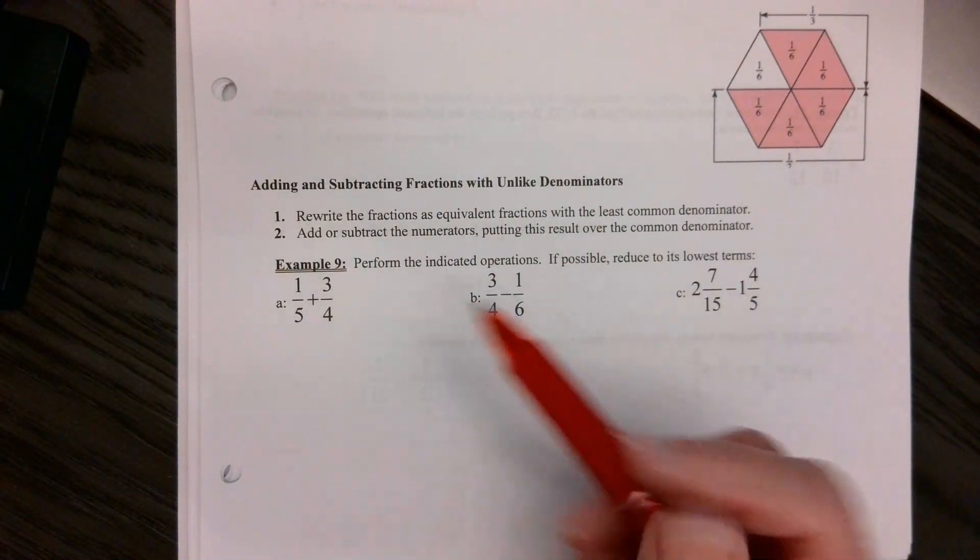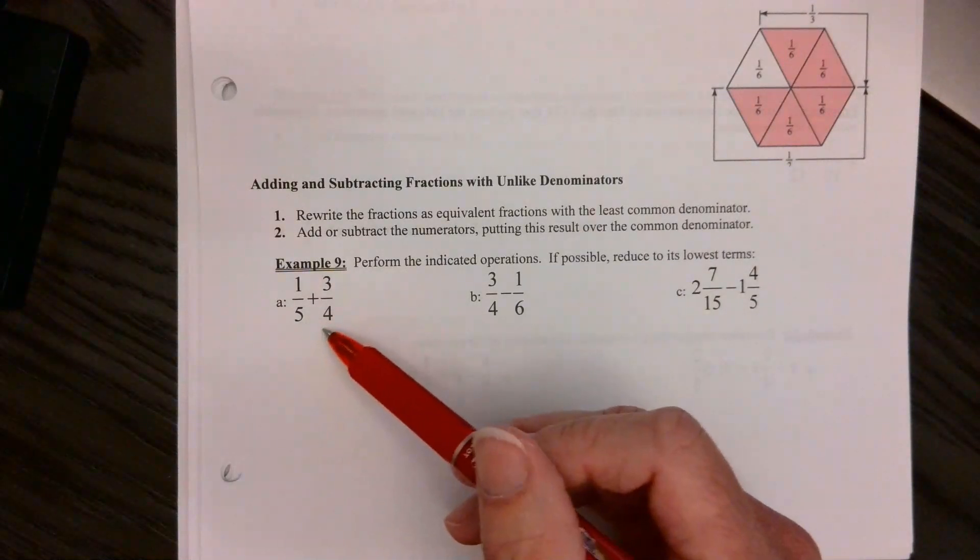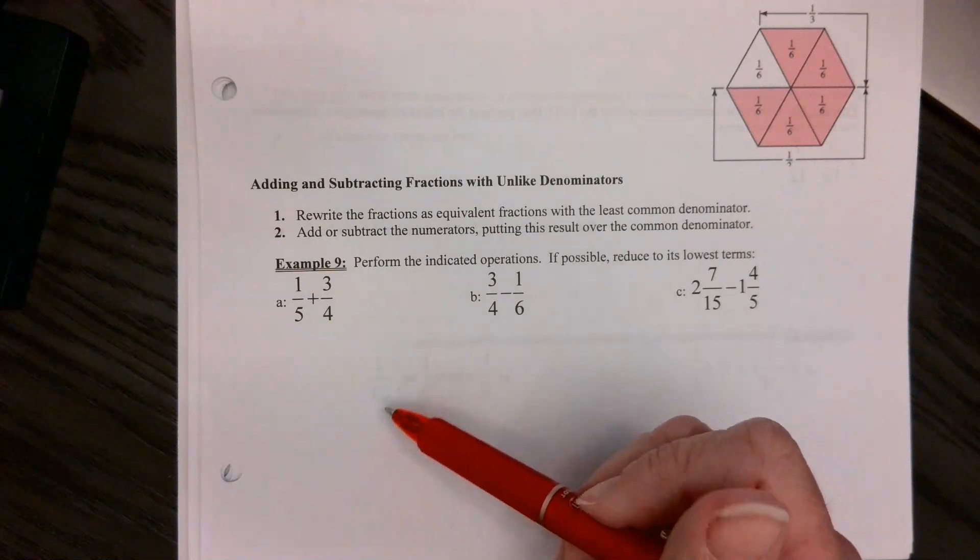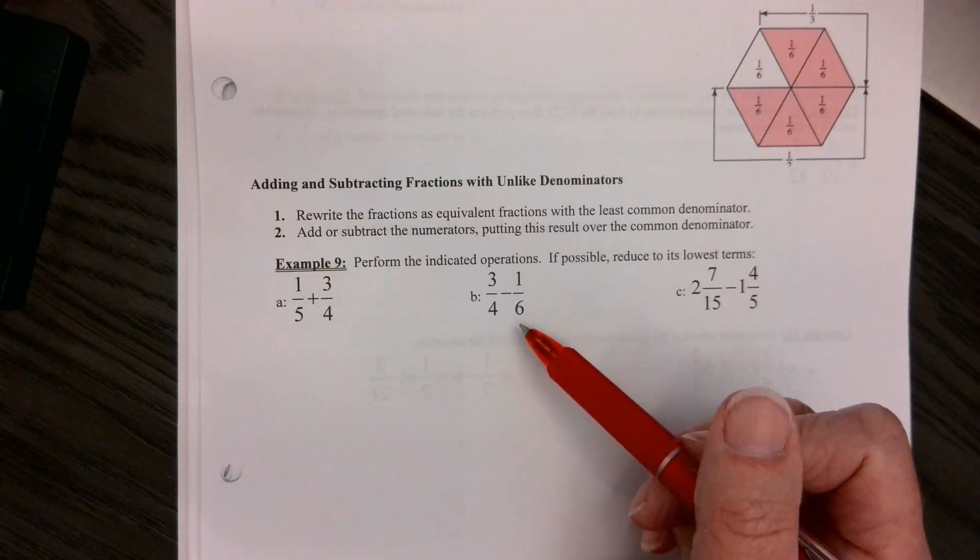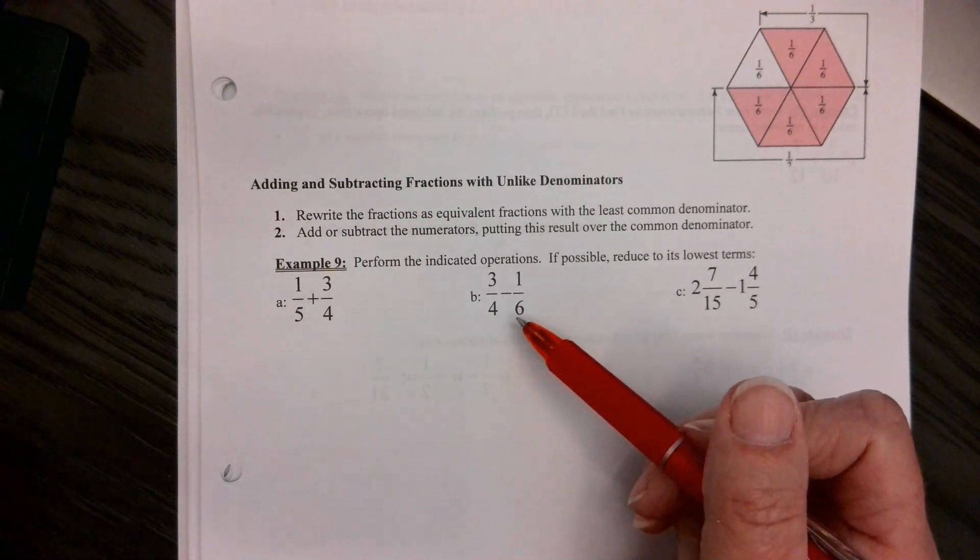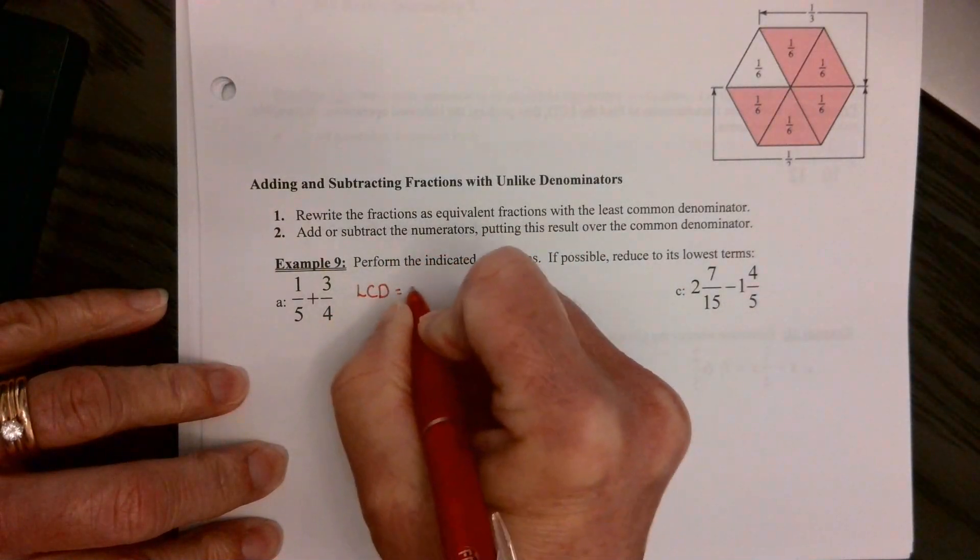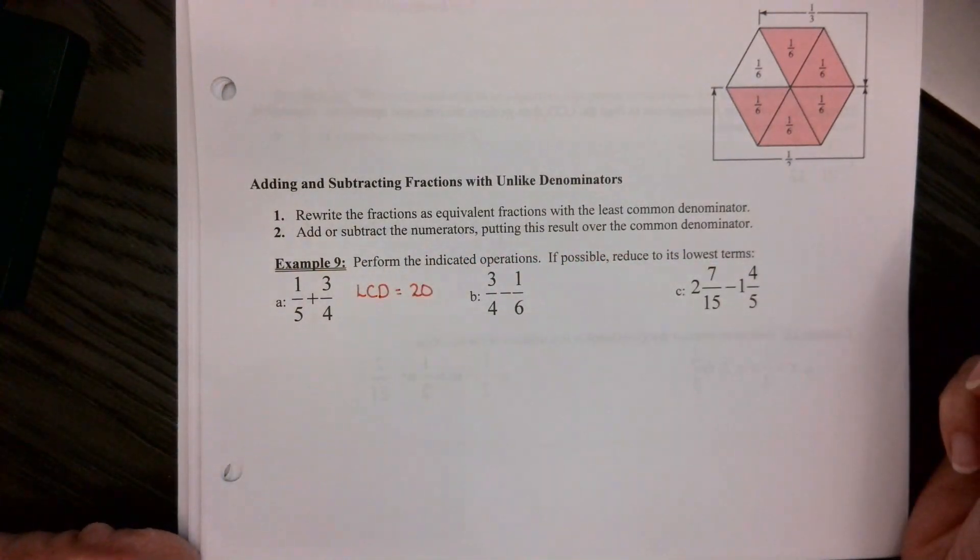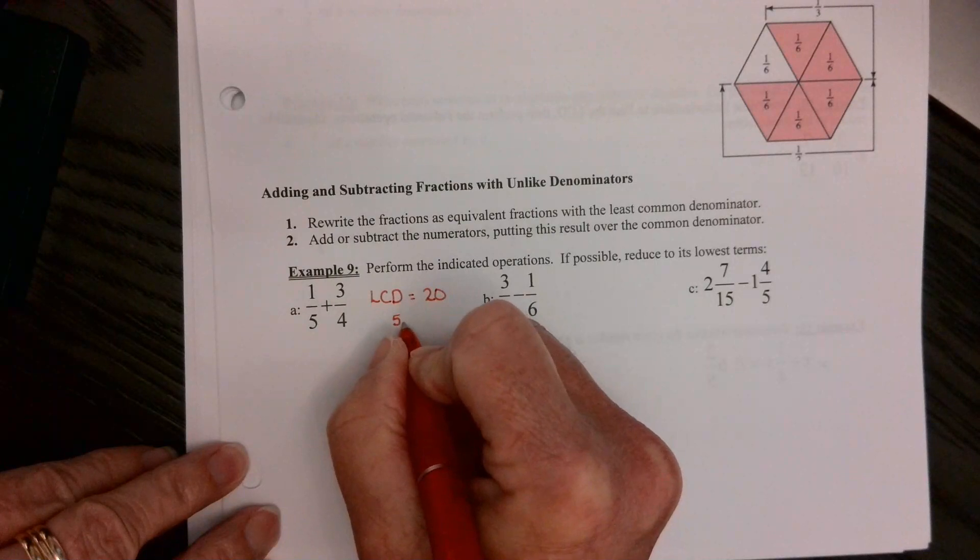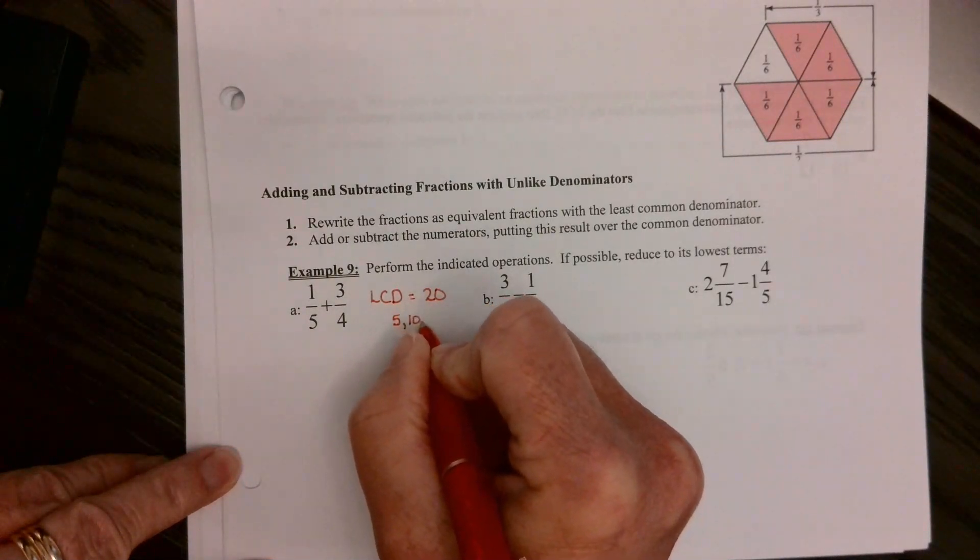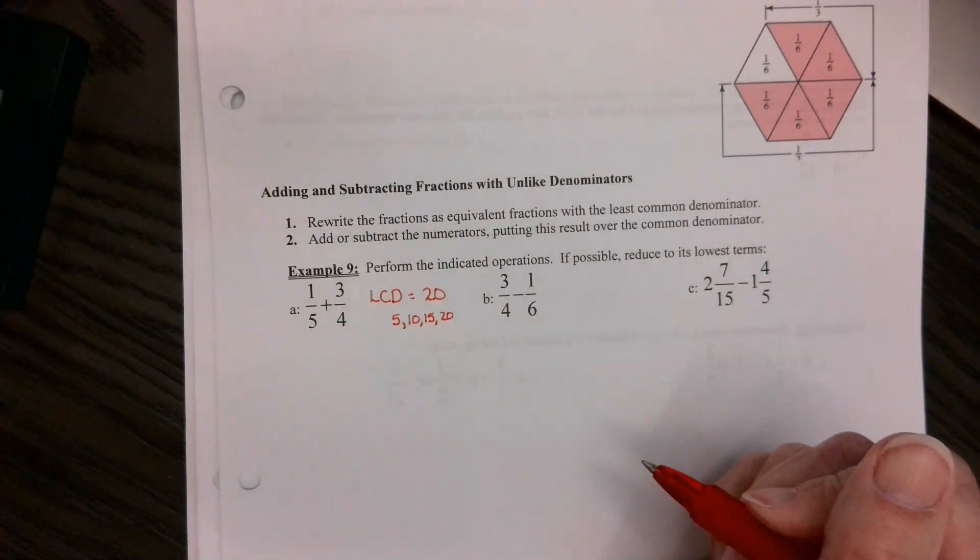So, what you need to do is you need to find a number that four and five will both go into. You can always multiply them to get a number. You're just going to have to reduce probably at the end. But some of the times that number gets big. Like right here, you can use 24 because four and six will both go into it. But there's a smaller number of 12. That's the least common denominator. So let's first find the least common denominator, which here would be 20. Now, there's a couple ways I find that. I always like to take the biggest number, which is five. And I list its multiples. Five times one is five. Five times two is 10. Five times three is 15. Five times four is 20 until I get to a number that four went into. There we go. That's one way.